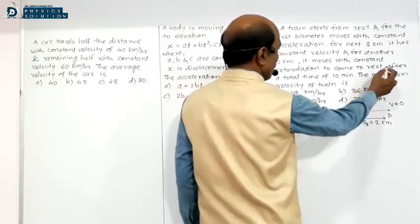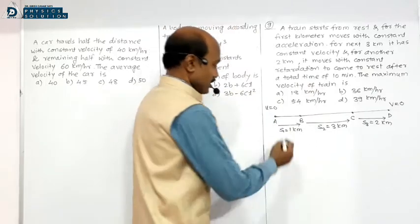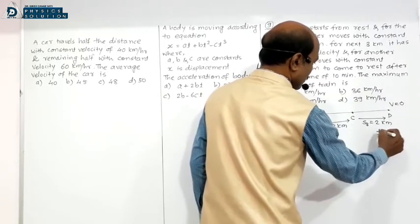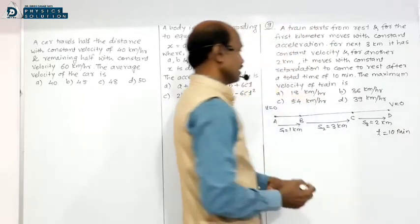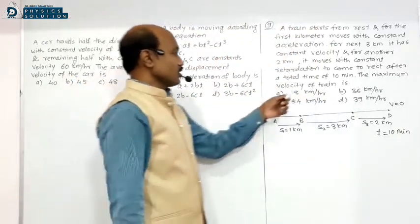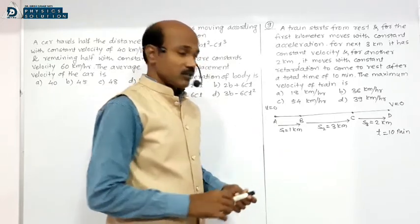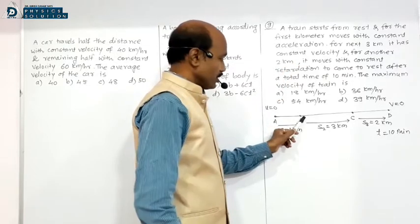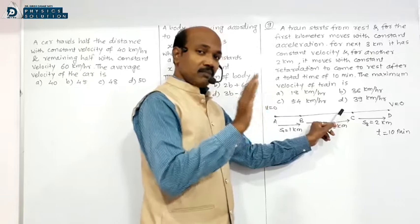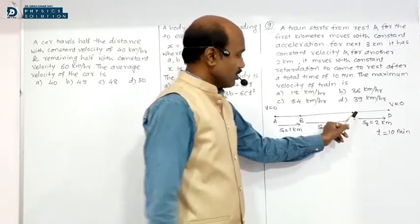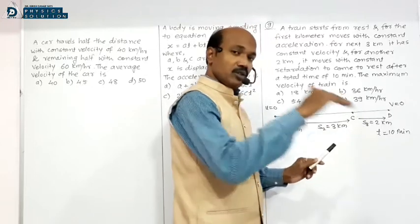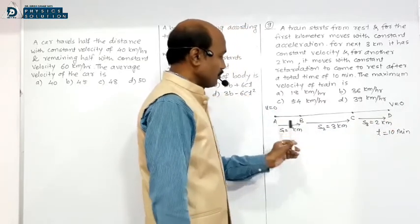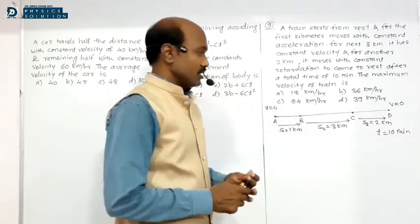From A to D, the total time is 10 minutes. The maximum velocity — from A to B velocity increases; B to C maximum velocity remains constant; C to D velocity decreases; at point D velocity becomes 0. So maximum velocity occurs at B to C.